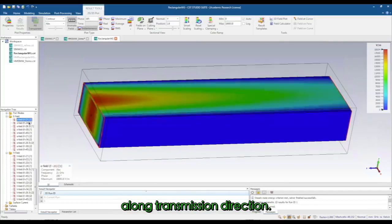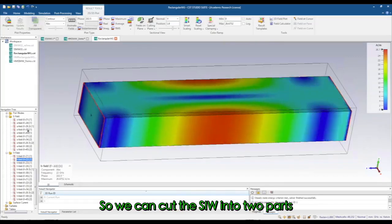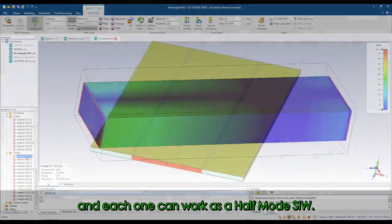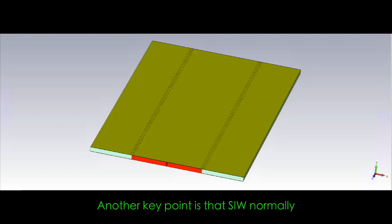In this case, we can regard there is a metallic wall at the middle of the waveguide along transmission direction. So we can cut the SIW into two parts, and each one can work as a half mode SIW. Another key point is that SIW normally has a higher ratio of width to height.